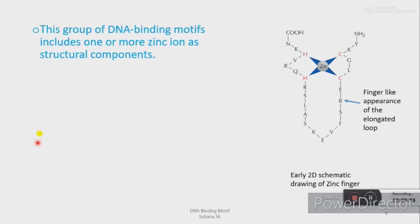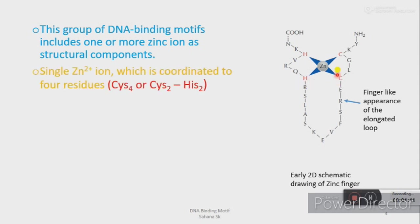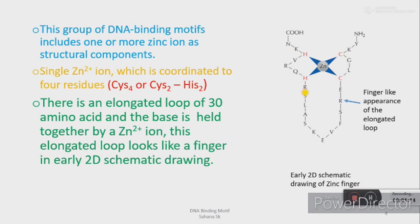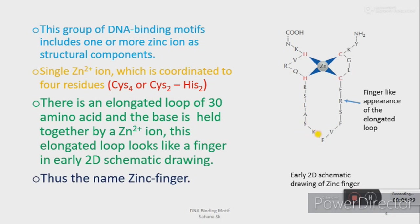This group of DNA binding motifs includes one or more zinc ions as structural components. This is a 2D diagram of the zinc finger motif. Here you can see a single zinc ion is tetrahedrally coordinated with four residues — two cysteines and two histidines — and there is also an elongated loop. You might ask why it is named 'zinc finger.' The elongated loop appeared as a finger, so scientists named it zinc finger.